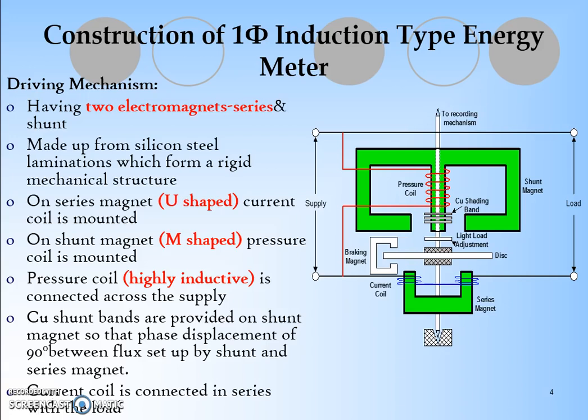The pressure coil is highly inductive in nature. Copper shunt bands are provided on shunt magnet so that phase displacement of 90 degrees between flux set up by shunt and series magnet is created. The main purpose is to create the phase difference. The current coil is connected in series with the load.